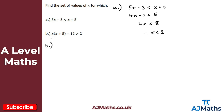Now for part b — this is a quadratic inequality. When we expand the bracket with the term on the other side, we get a quadratic. Expanding gives us x² + 5x + 5x - 12 > 2.